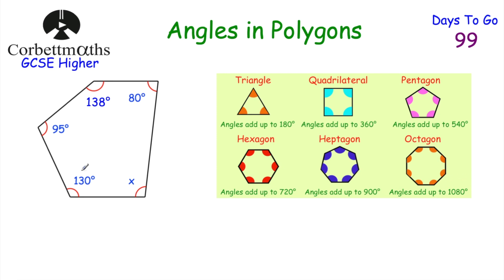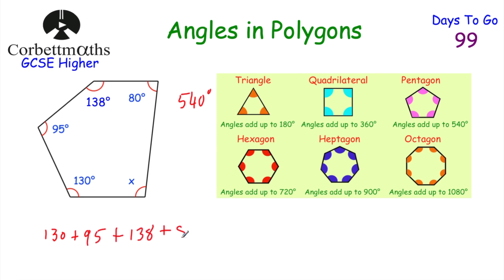So let's have a look at a question. Here we've got an irregular polygon — that's irregular because the angles aren't all the same as each other. If they're all the same, it's called a regular polygon. You've been asked to find the size of angle x. Feel free to pause the video now to try it. It's a pentagon because there are five sides, so the angles add up to 540 degrees. We add together the four given angles: 130 plus 95 plus 138 plus 80 gives us 443 degrees. Then 540 subtract 443 equals 97 degrees.